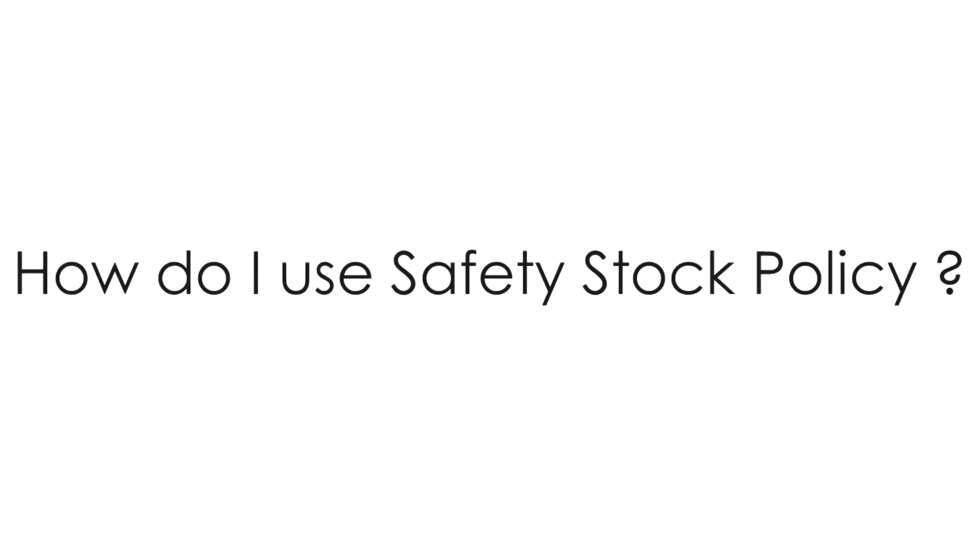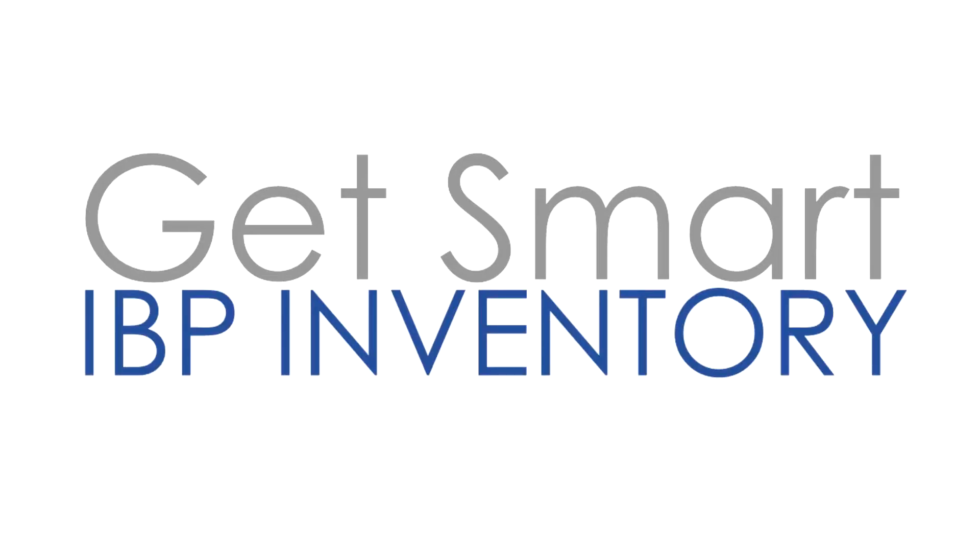Hi, this is Wade Smith with our Get Smart series. Today's topic: how do I make IBP calculate safety stock for only specific purposes? You can have a cool user interface and a sophisticated multi-echelon inventory optimizer, but if you can't accurately model your own unique supply chain, then what's the point? A common requirement in IO tools is to control those internal service levels or hold safety stock only for specific purposes.